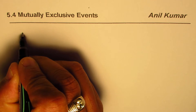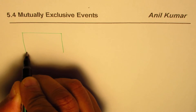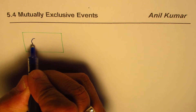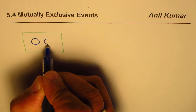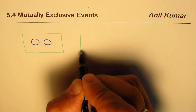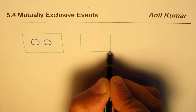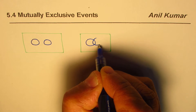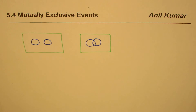We have a sample space whenever we are working. In the sample space, if we have more than two events, we can define two events with circles. These two events could be separate or overlapping. The first set of events are called mutually exclusive events and the second set is non-mutually exclusive.